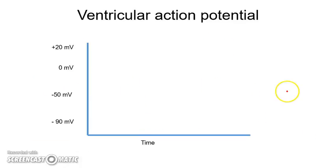Starting with the contractile cell action potential, we'll look at the ventricular myocyte action potential. It has a distinct plateau and a duration of around 200 to 300 milliseconds. The resting membrane potential is around minus 90 millivolts. Whenever there is a small depolarization, ions coming through gap junctions cause the opening of a large number of sodium channels, resulting in fast depolarization up to around plus 20 millivolts.